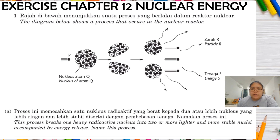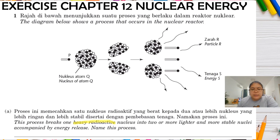In the diagram, particle P bombards nucleus Q. After that, Q splits into two lighter nuclei, and three neutrons come out. The question asks to name this process — breaking one heavy radioactive nucleus into two or more parts accompanied by energy release. The process is called nuclear fission — the bigger nucleus is broken into smaller ones.